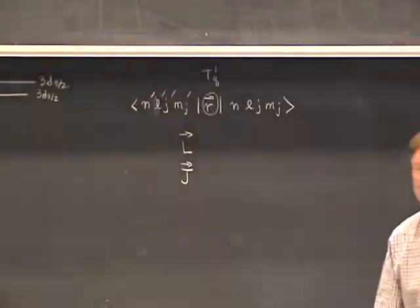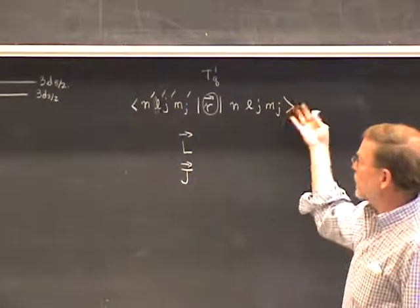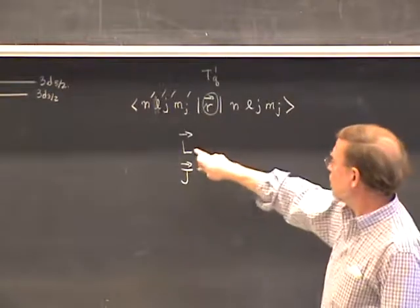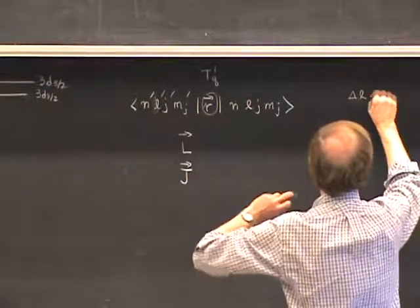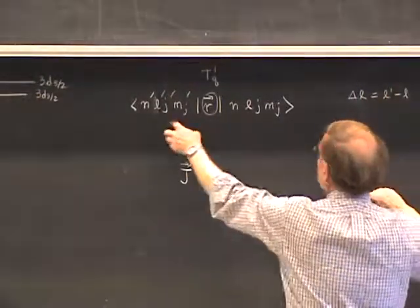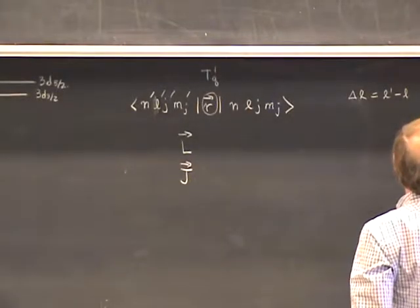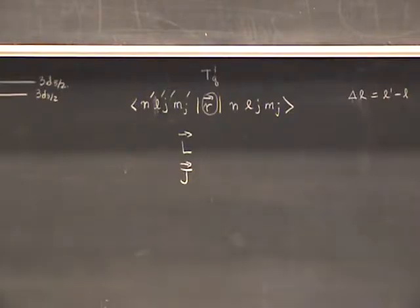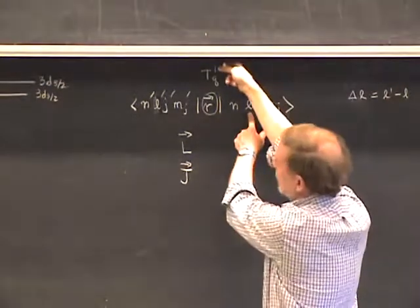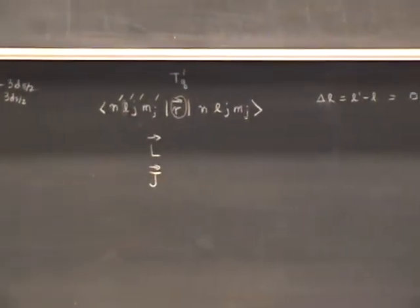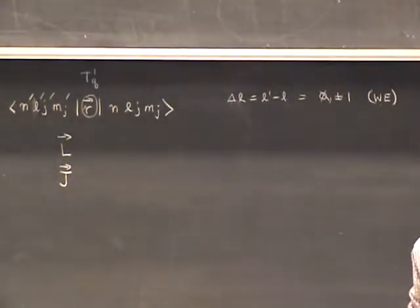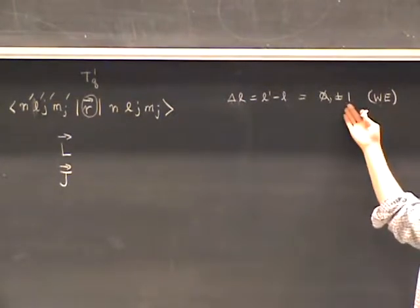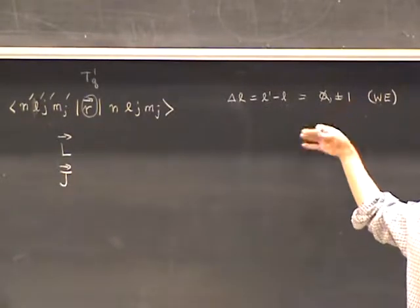The position operator also transforms as a vector under total rotations generated by J. Using the Wigner-Eckart theorem with L gives a selection rule on the L quantum numbers: ΔL = L′ − L equals zero or ±1. This comes from the rules of addition of angular momentum — L combined with 1 must be able to reach L′. However, parity excludes ΔL = 0, so we end up with the electric dipole selection rule ΔL = ±1. These are the same rules as in the electrostatic model.